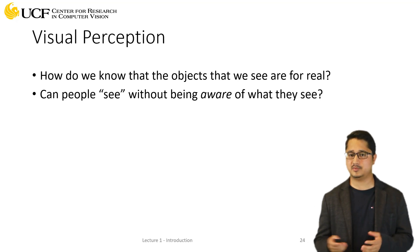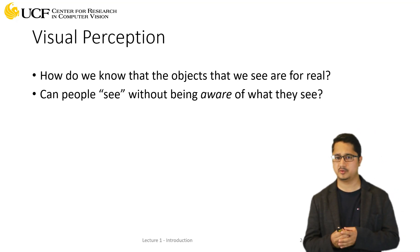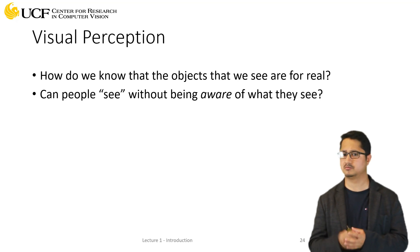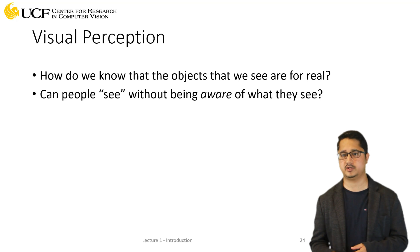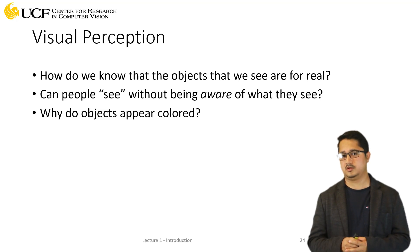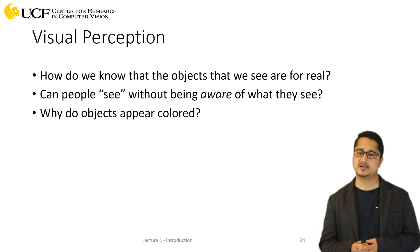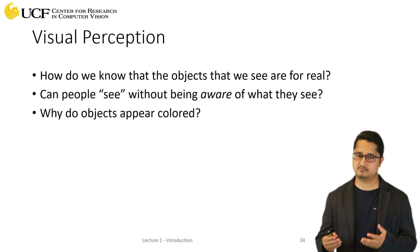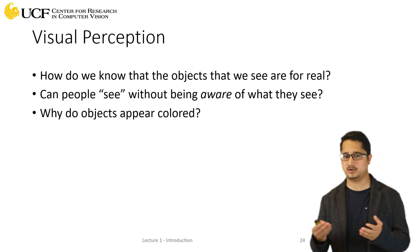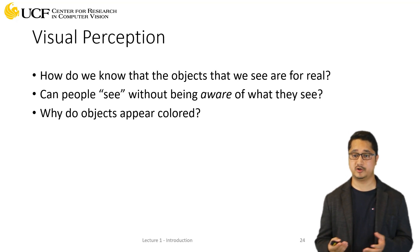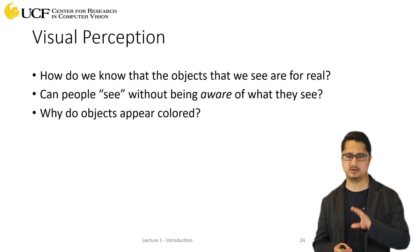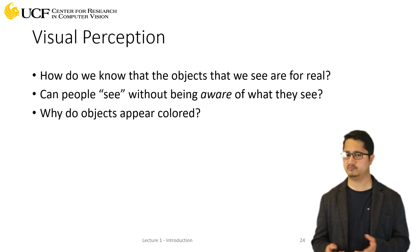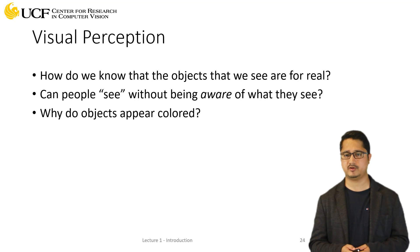This happens a lot — sometimes your eyes are wide open and you are just looking at something but your brain is not processing anything and you are unaware of what's happening in your surroundings. The other thing is why do objects present in a 3D environment appear to be colored? These are some interesting questions related to visual perception which we will try to answer.